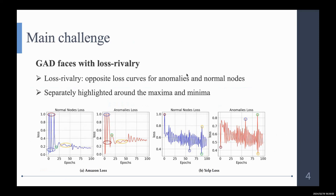We observe that the normal nodes and the anomalies have exactly opposite loss curves, which is separately highlighted around the maximum and the minimum of loss curves.